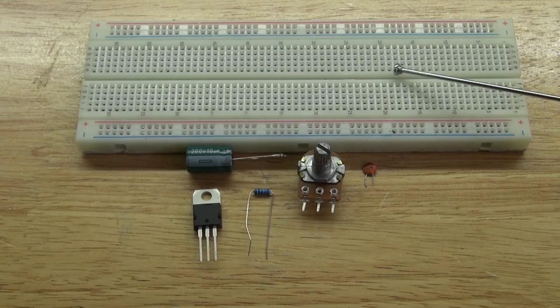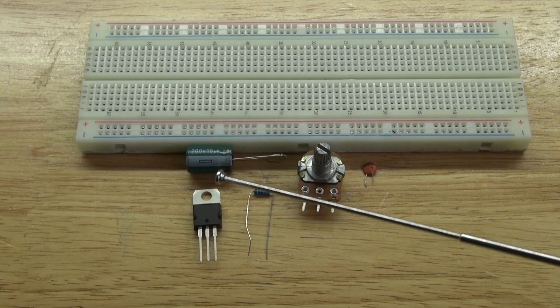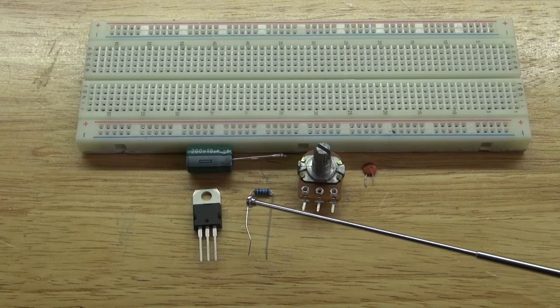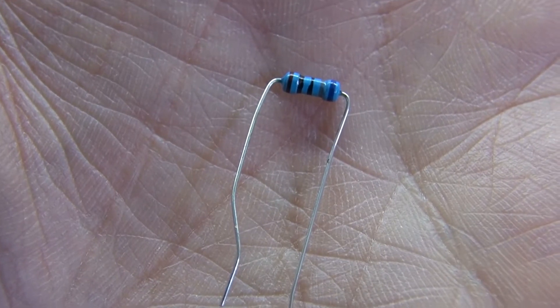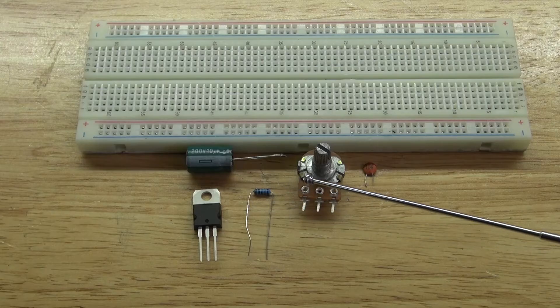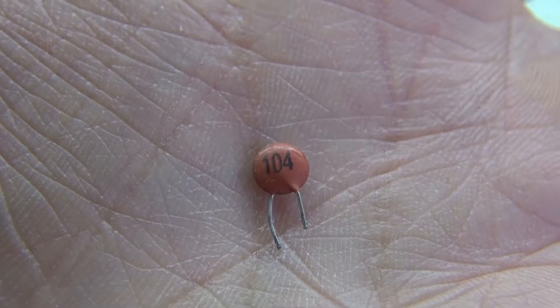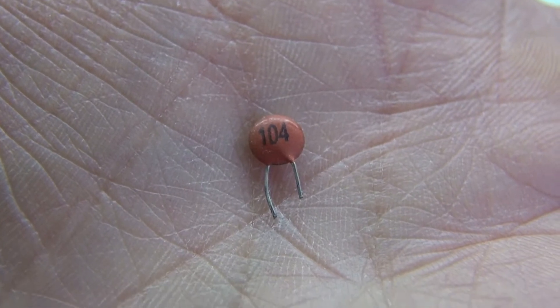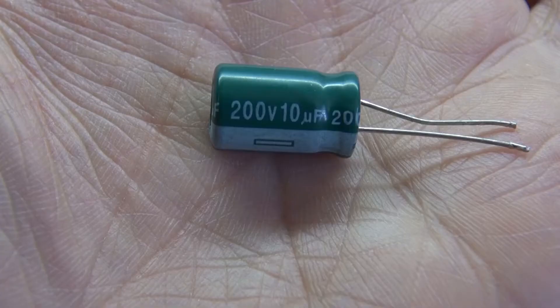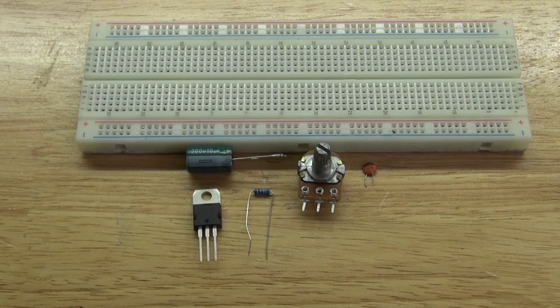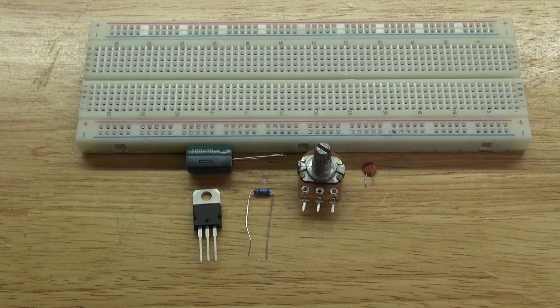The items you're going to need are this breadboard, an LM317 transistor, a 680 ohm resistor, a 5k ohm potentiometer or any of your choice, a 104 nanofarad ceramic capacitor, and a 10 microfarad electrolytic capacitor. Now let's go ahead and assemble the circuit together.